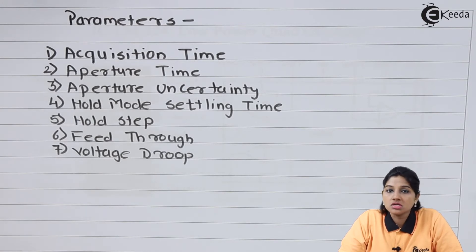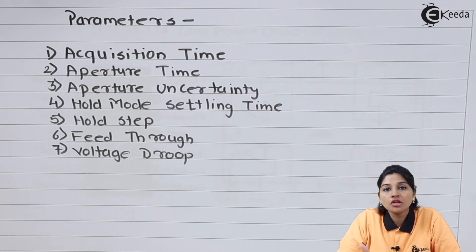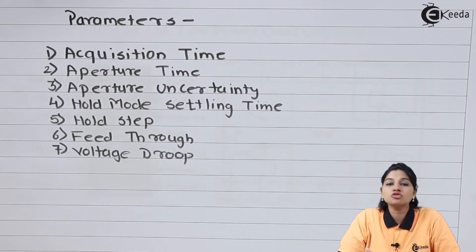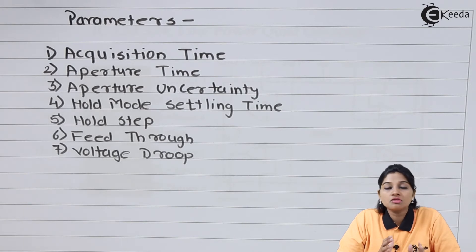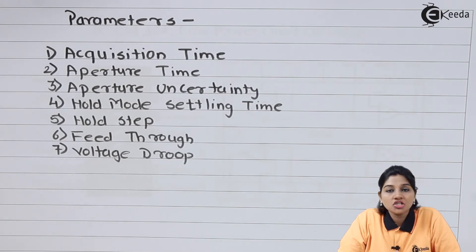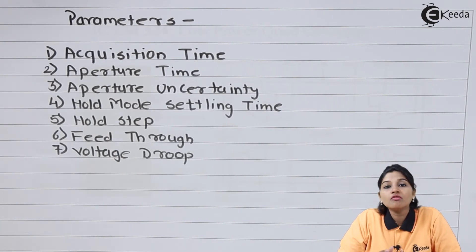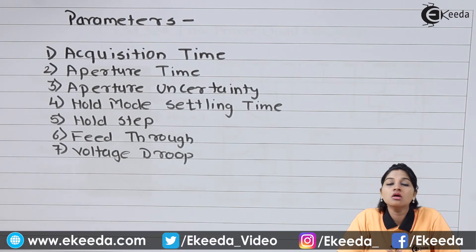The next parameter is hold step. When the operation of the circuit changes from sample mode to hold mode, there will be some unwanted charge transfer from the driver switch to the capacitor. This unwanted charge transfer is because of the parasitic capacitors associated with the switch, due to which the output voltage changes. That change in output voltage is called hold step.